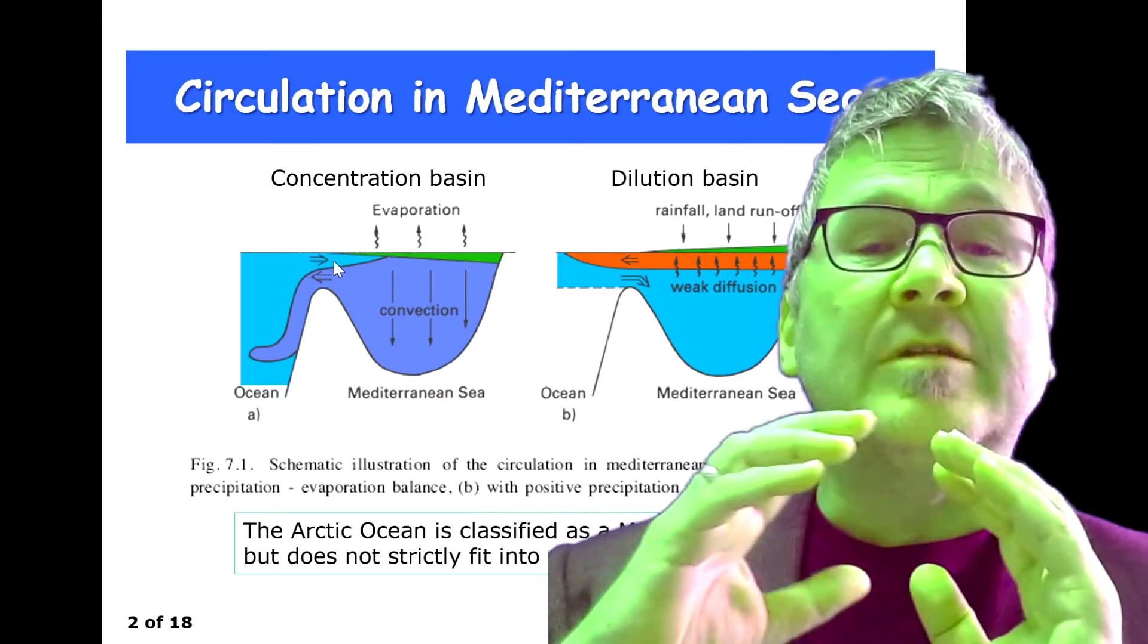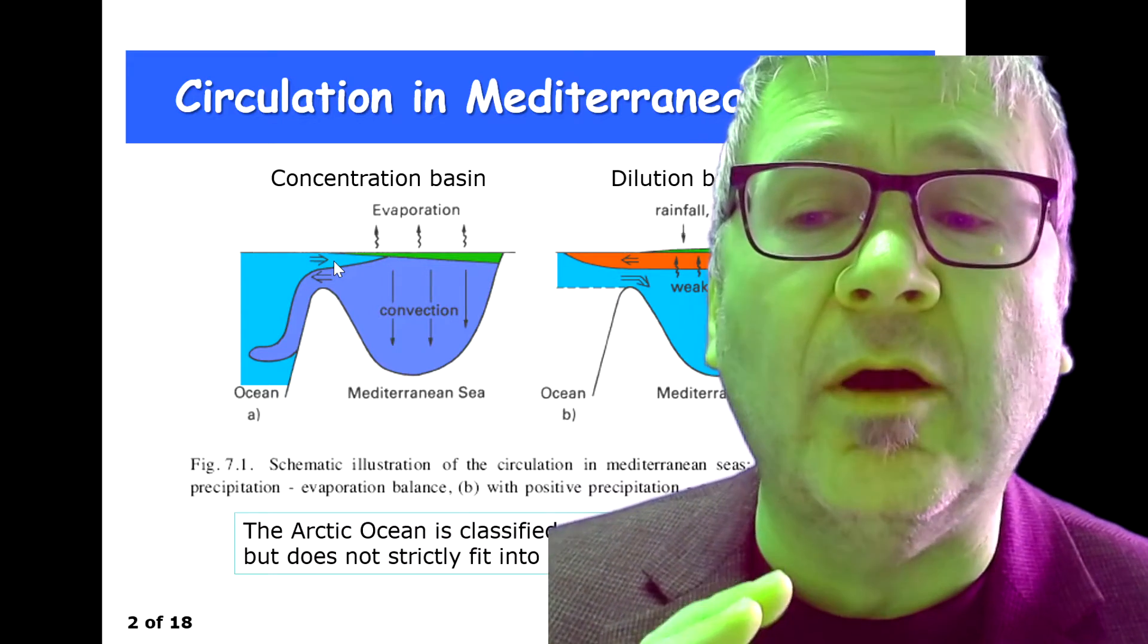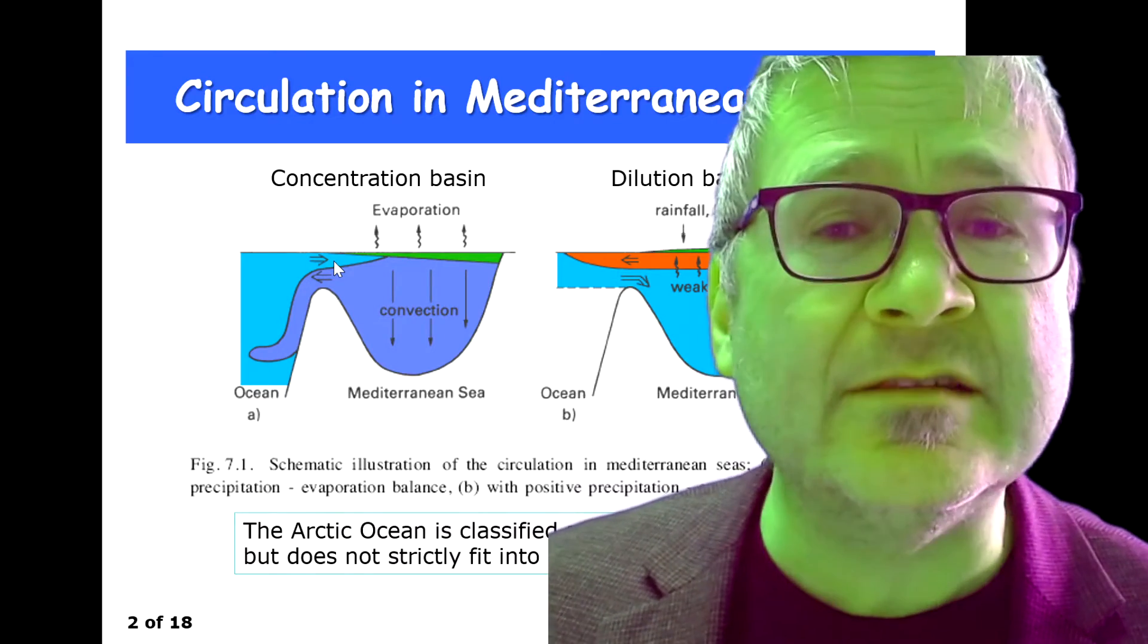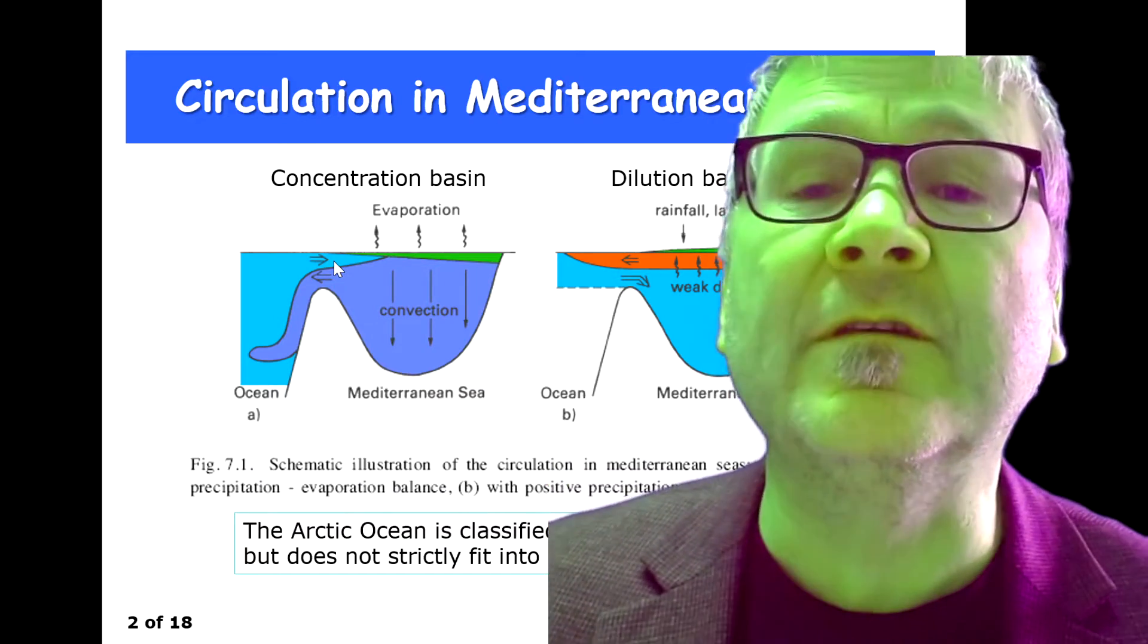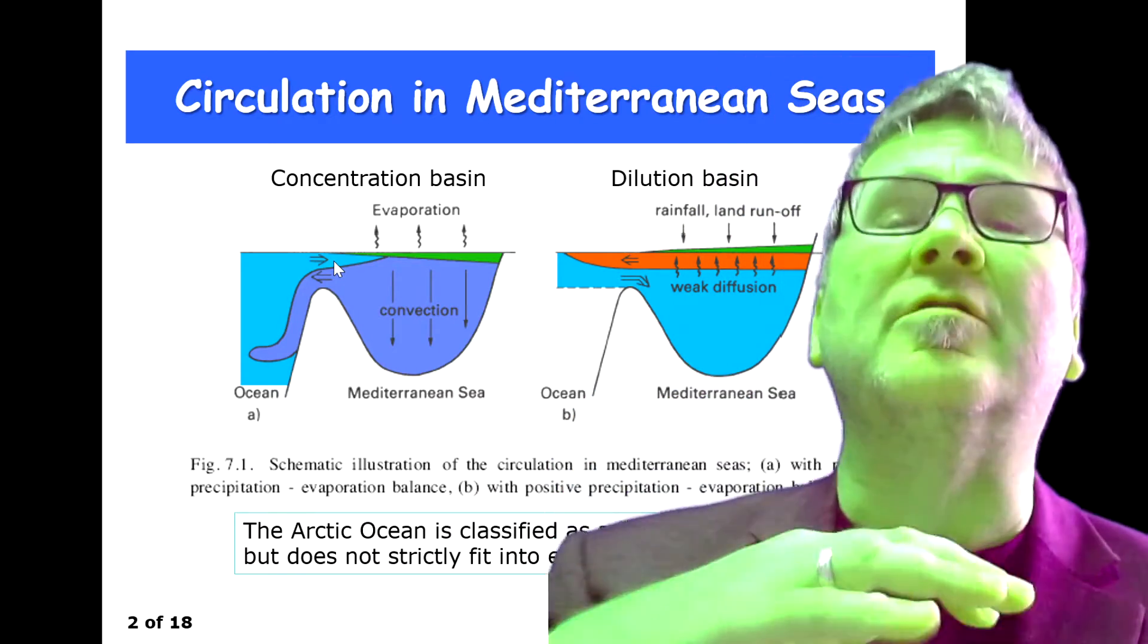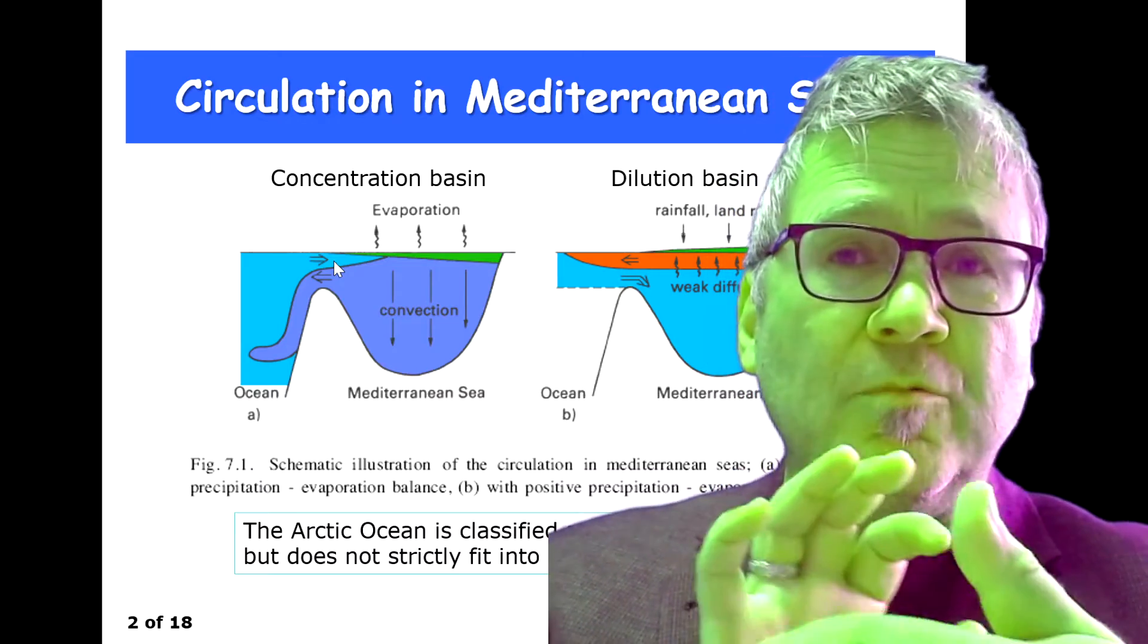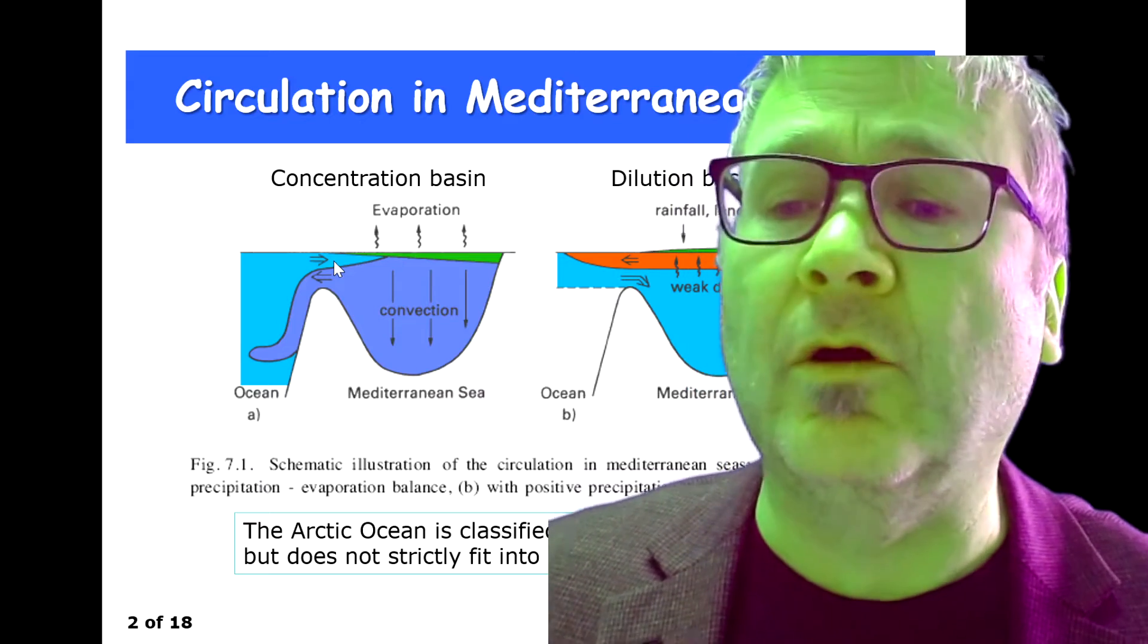Most importantly, the exchange circulation over the sill is driven by density difference. Not winds, nothing else—the density difference drives this exchange. I forgot to mention, it's not only a vertical constraint but also a horizontal constraint, and we call that a strait. It's a region of narrow channel connection between two oceanic basins.